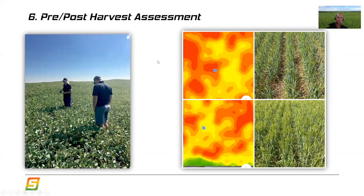Later in the season, an agronomist would typically come back and do some visual assessments of the crop, looking for anything that can be done differently and understanding the relative variability in the field. In this case, we're looking at a really dry zone one where the crop is fairly drought-affected, and really only a few feet away in zone five, quite a dramatic difference in the look of this barley.